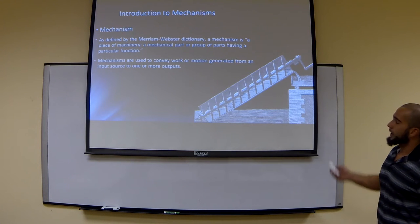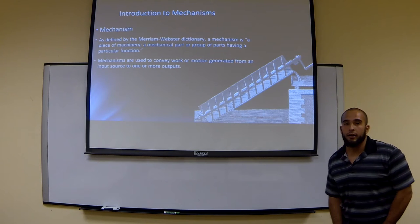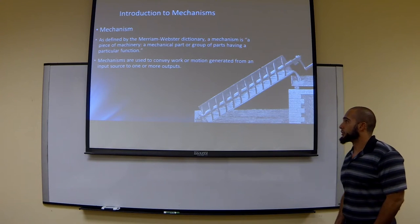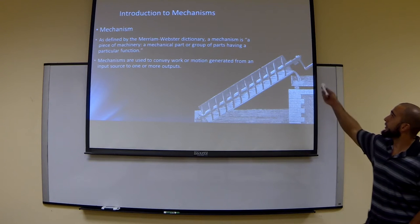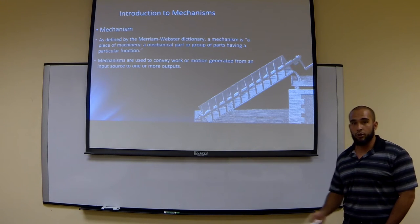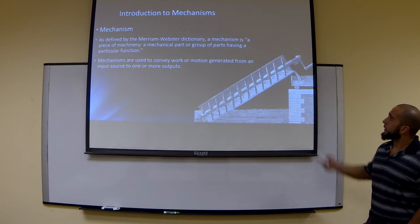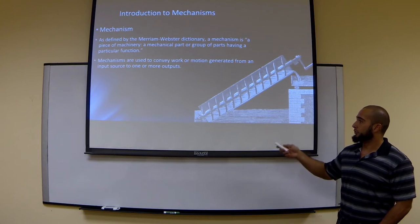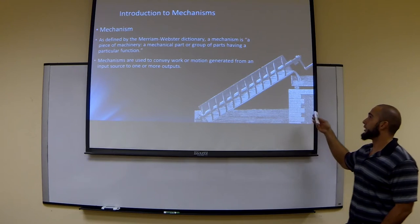As you can see on the lower right-hand side, this is an example of a mechanism from the Renaissance era, which is called an Archimedes screw. As you can see, the crank here would be your input. As you rotate the crank, it rotates the screw, and what this does is it transfers water from a lower-lying region to a higher area.